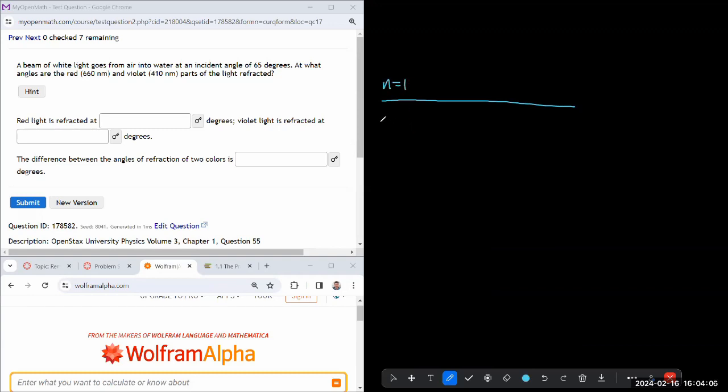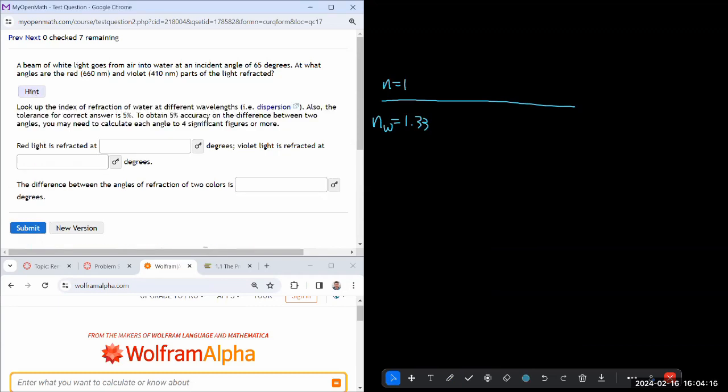And it's n equals 1. And I happen to have index of refraction of water memorized, 1.33. Is that in the hint? It's not in the hint. Oh, and in fact, even though I have it memorized, I'm actually going to have to look up numbers because of something called dispersion that I will need to take into account.